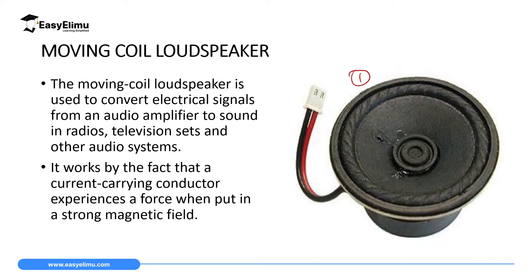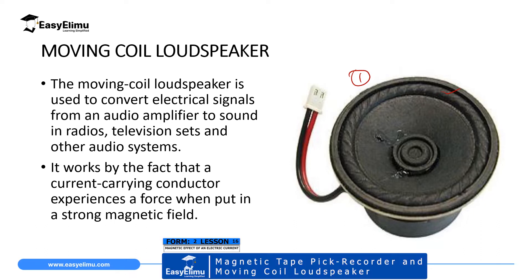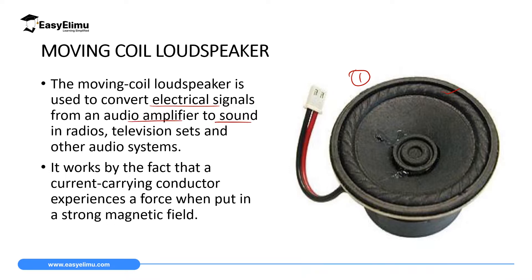The first application we want to look at is a moving coil loudspeaker, and we have an image of the same on the screen. This is how most moving coil loudspeakers look like. These moving coil loudspeakers are used to convert electrical signals from an audio amplifier to sound. You can find them in radios, television sets, computer sets, and other audio systems. The moving coil loudspeaker utilizes the fact that a current-carrying conductor experiences a force when placed in a strong magnetic field.